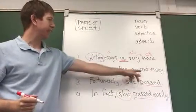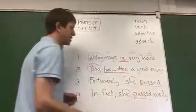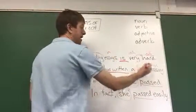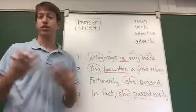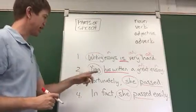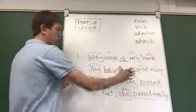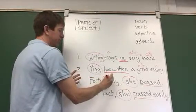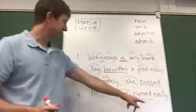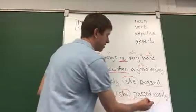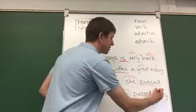Sentence number two: we have 'a great essay.' So 'essay' is a noun. What describes a noun? An adjective — so 'great' is an adjective. 'A' is an article or determiner; we'll skip over that for now. The only other word we have is 'fortunately,' which is modifying the whole sentence and has '-ly,' so it really looks like an adverb. In sentence four, 'easily' is modifying the verb — what tends to modify verbs? Adverbs. It's also got '-ly' on it, so let's call it an adverb.